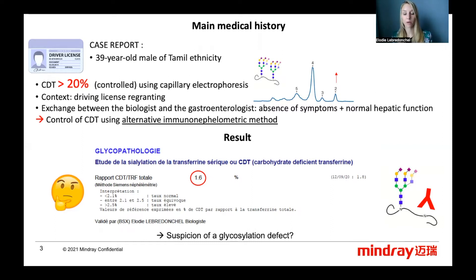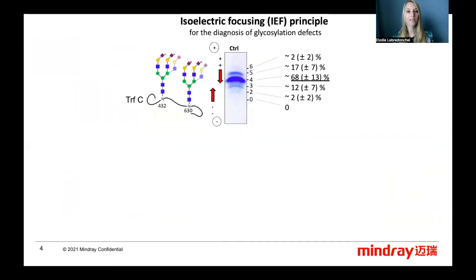Such discrepancy between the two methods can be seen in some congenital disorders of glycosylation. We explored this possibility with another method, isoelectric focusing. This is the reference method for the diagnosis of congenital disorders of glycosylation. Let me explain how it works.